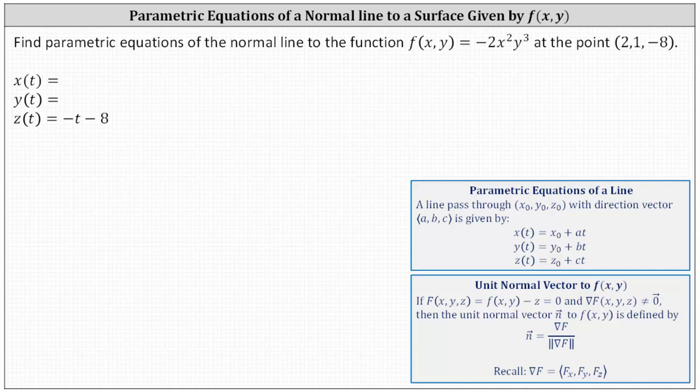Find parametric equations of the normal line to the function f(x, y) = -2x²y³ at the point (2, 1, -8).